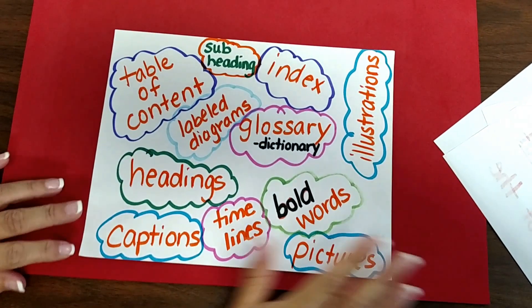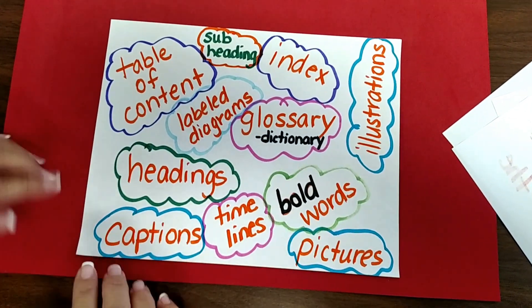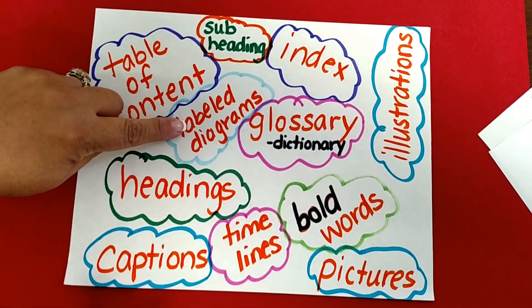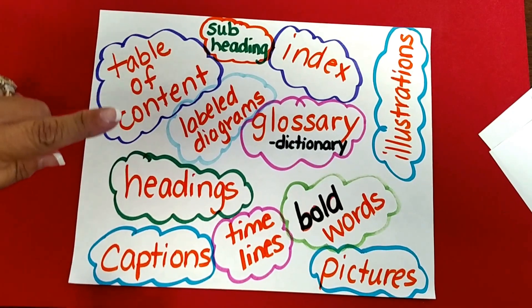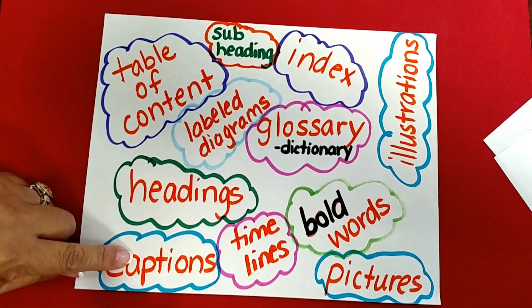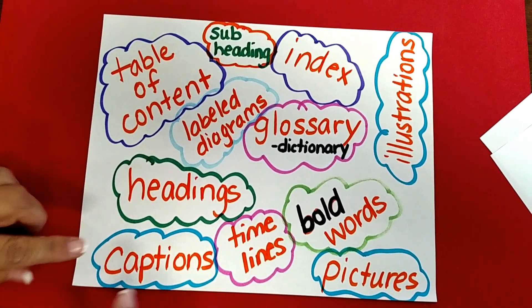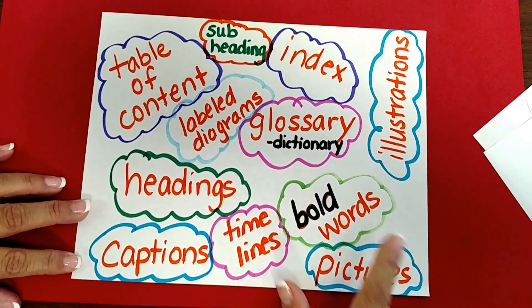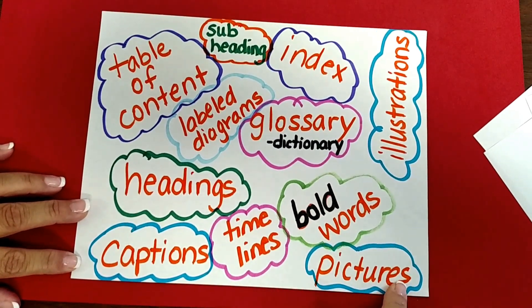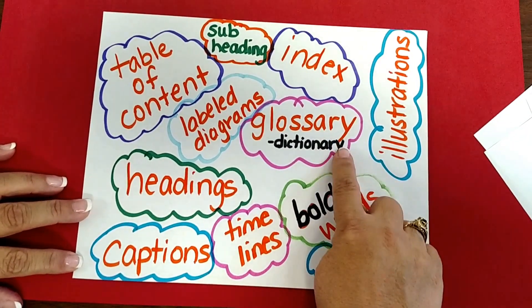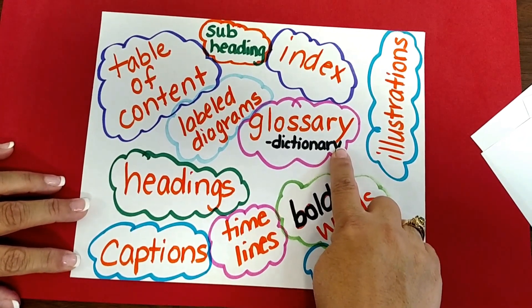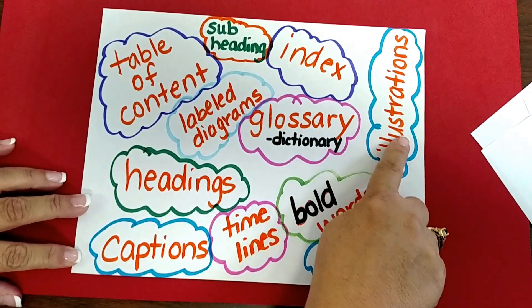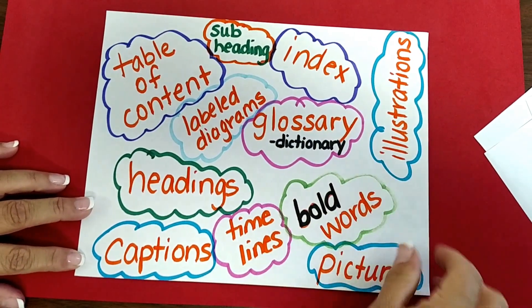Example time — here's some examples: the table of contents, labeled diagrams, headings, captions, timelines, bolded words, pictures, glossary or dictionary, index, subheadings, and don't forget illustrations.